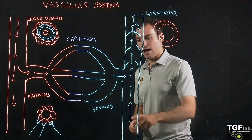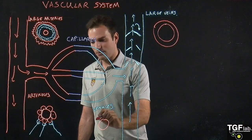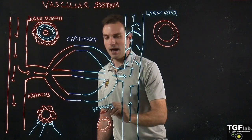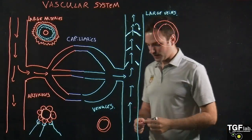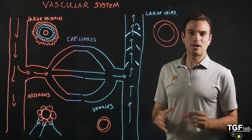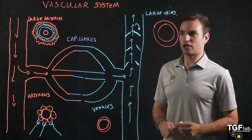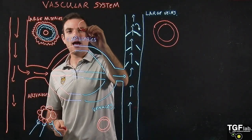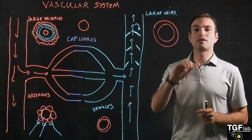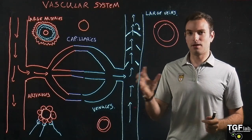The venules are very similar to the large veins — they have a lumen of comparable size to the arterioles, very thin endothelium, and some connective tissue around them. Finally, we have the capillaries, which are key for gas and nutrient exchange between the blood and our tissues. The capillary is composed of just the lumen surrounded by a very thin layer of endothelial cells, which allows easy gas and nutrient exchange.